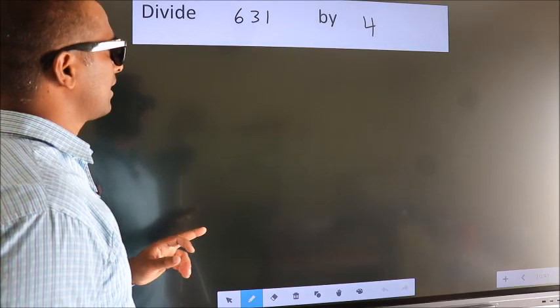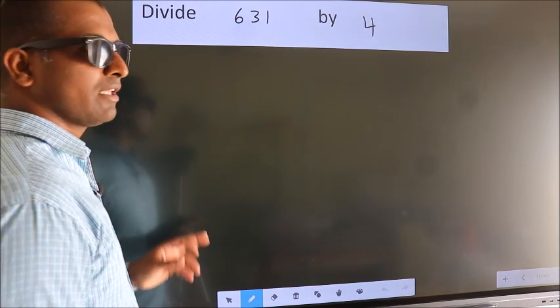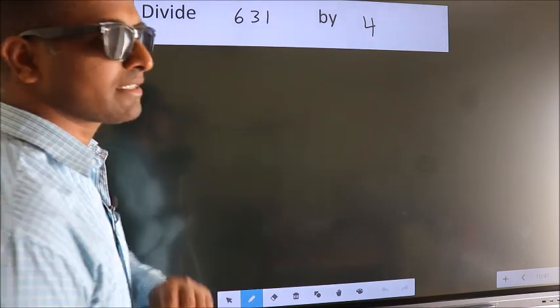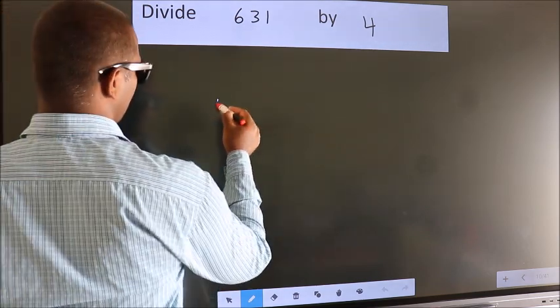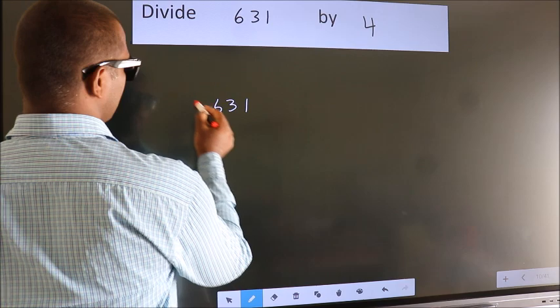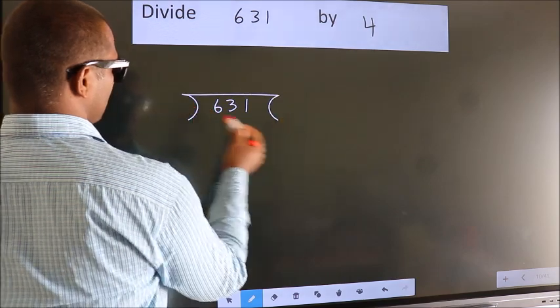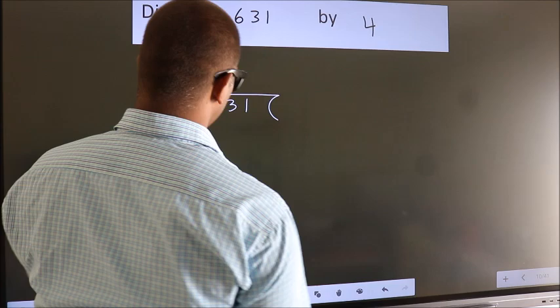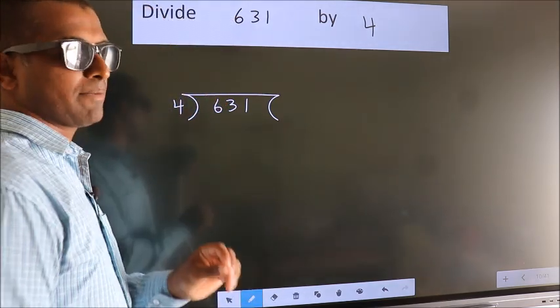Divide 631 by 4. To do this division, we should frame it in this way. 631 here, 4 here. This is your step 1.